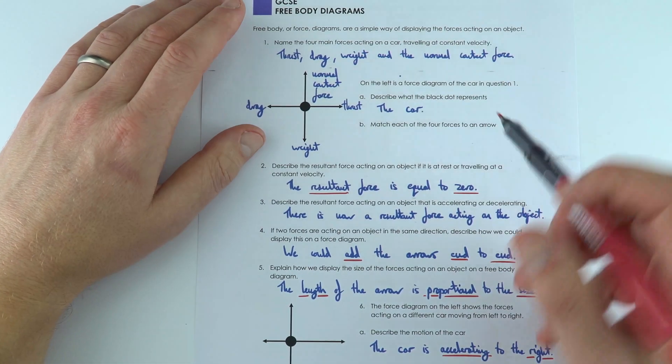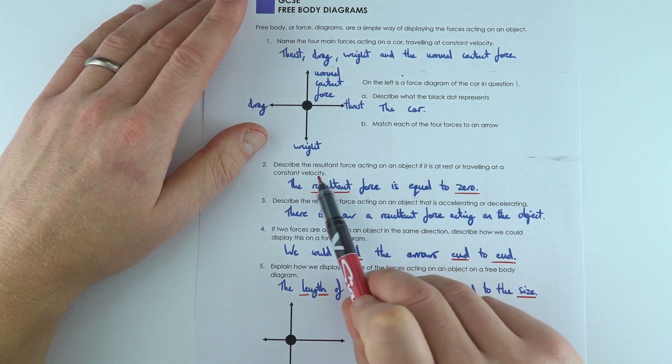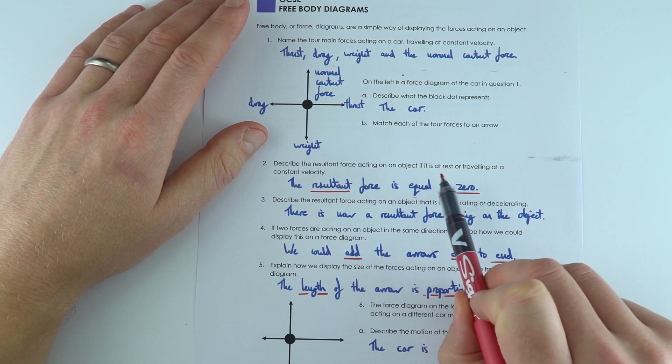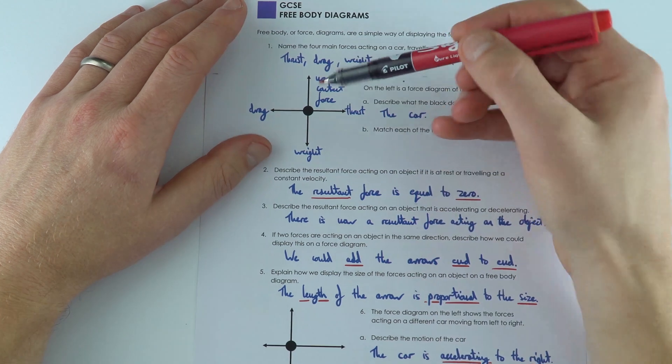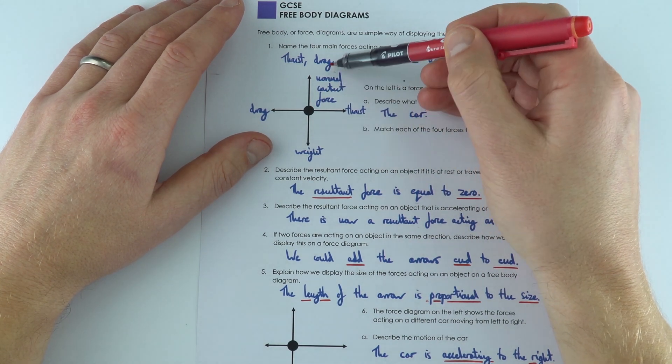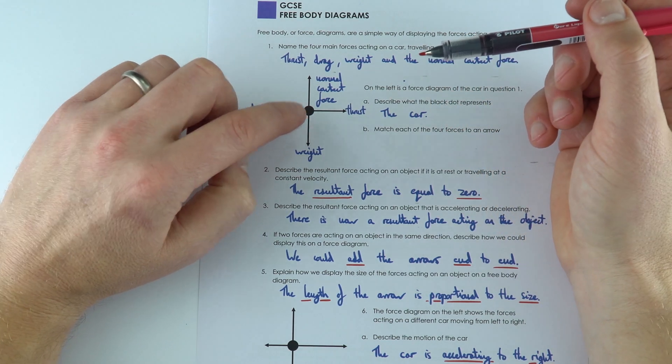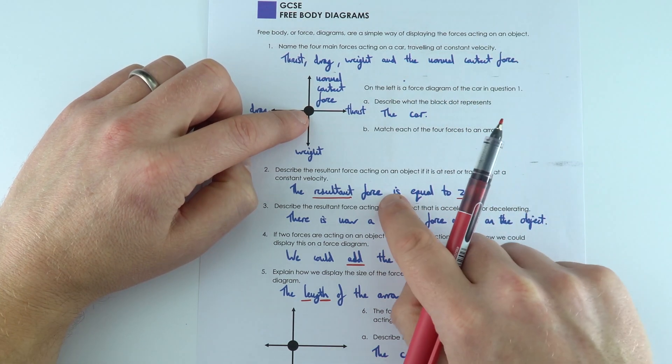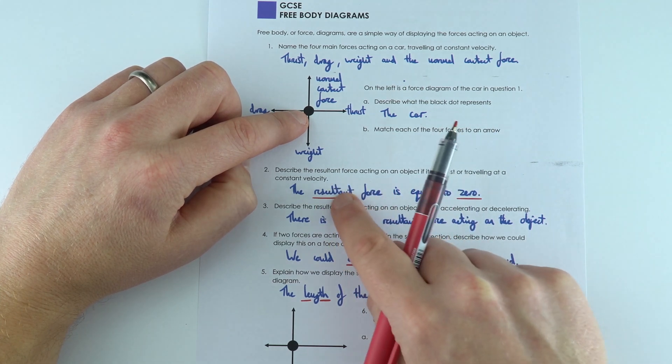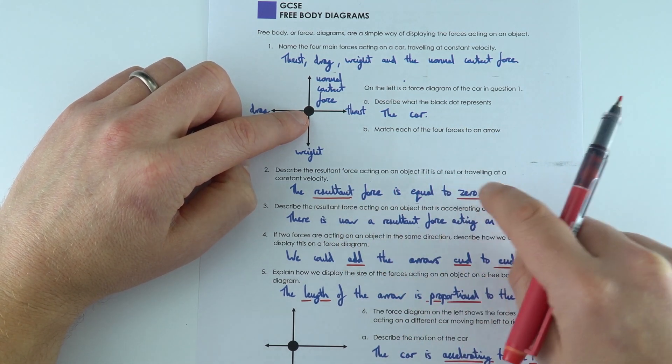If you've got something which is at rest or traveling at a constant velocity, that means there are going to be balanced forces acting on it, just like we have with the car up here. The weight is equal to the normal contact force, the thrust is equal to the drag, and that's why this is going at constant velocity. That means the resultant force, the overall resultant of all of these forces, is equal to zero.